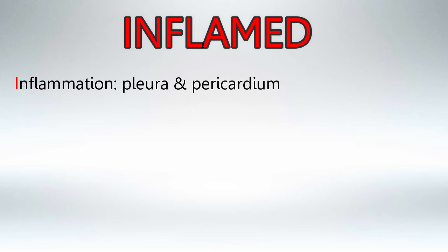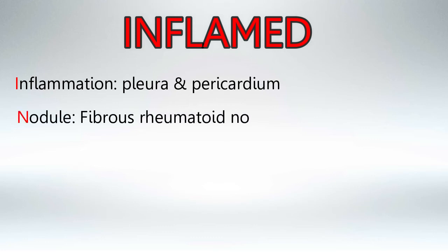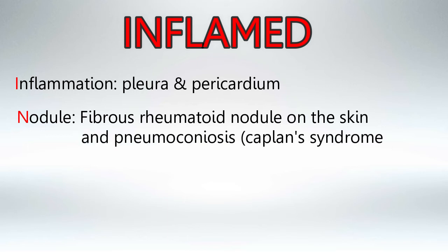To remember all the symptoms and characteristics of rheumatoid arthritis, I use the word INFLAMED. I is for inflammation of the pleura and the pericardium. N is for nodules, either in the skin or in the lungs. In the skin we call them rheumatoid nodules — they're just fibrous nodules. In the lungs we call them pneumoconiosis or Caplan syndrome.